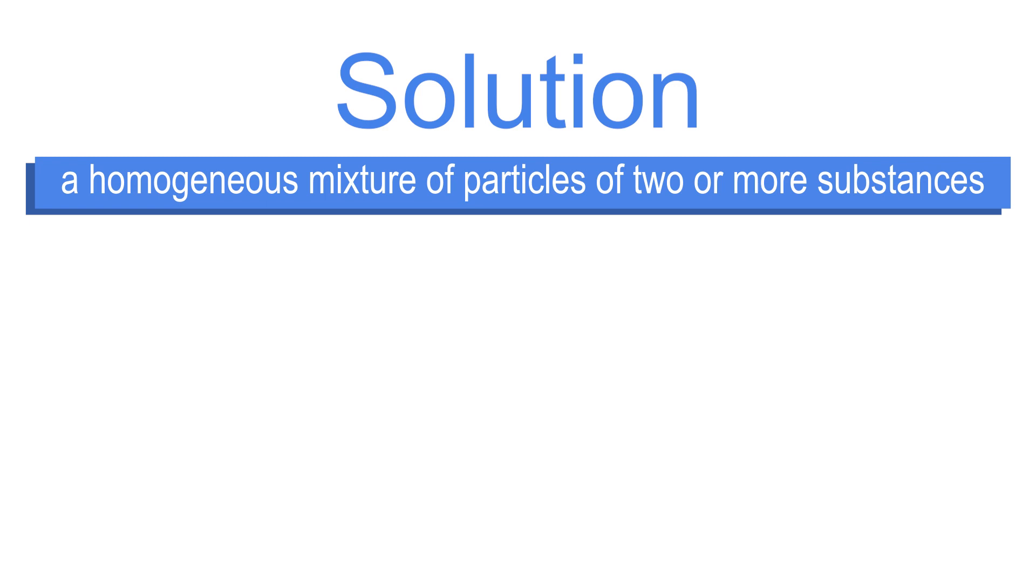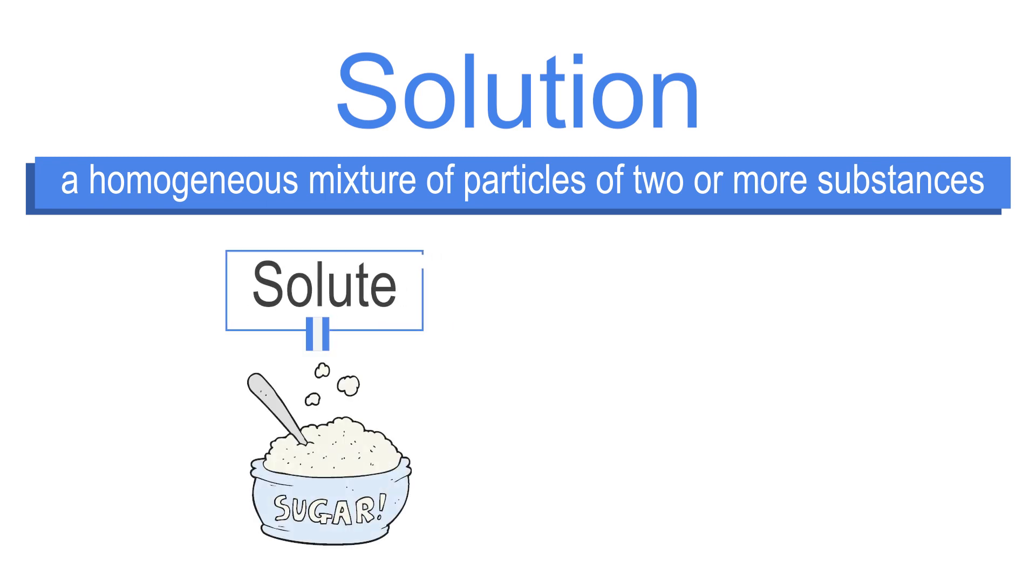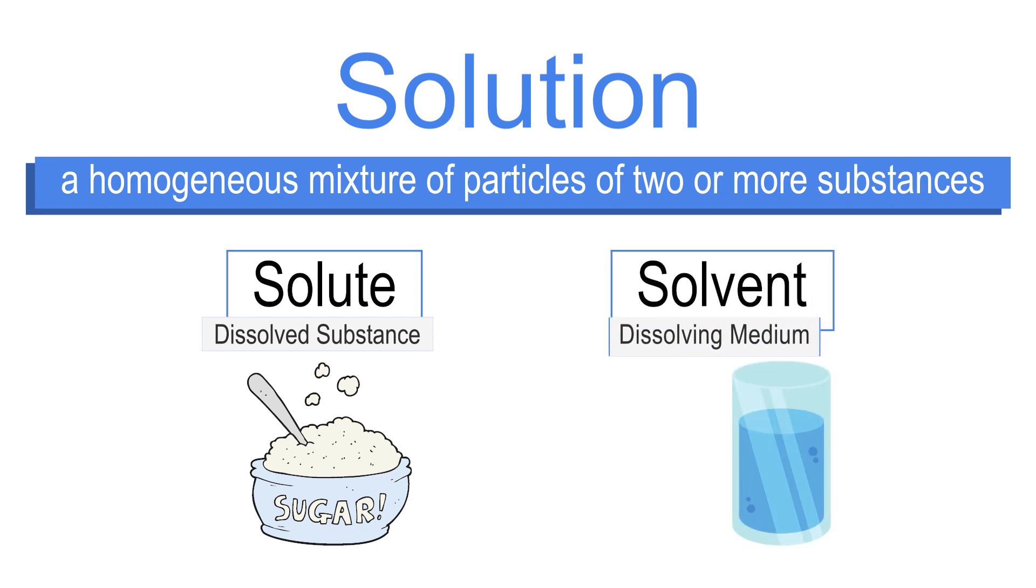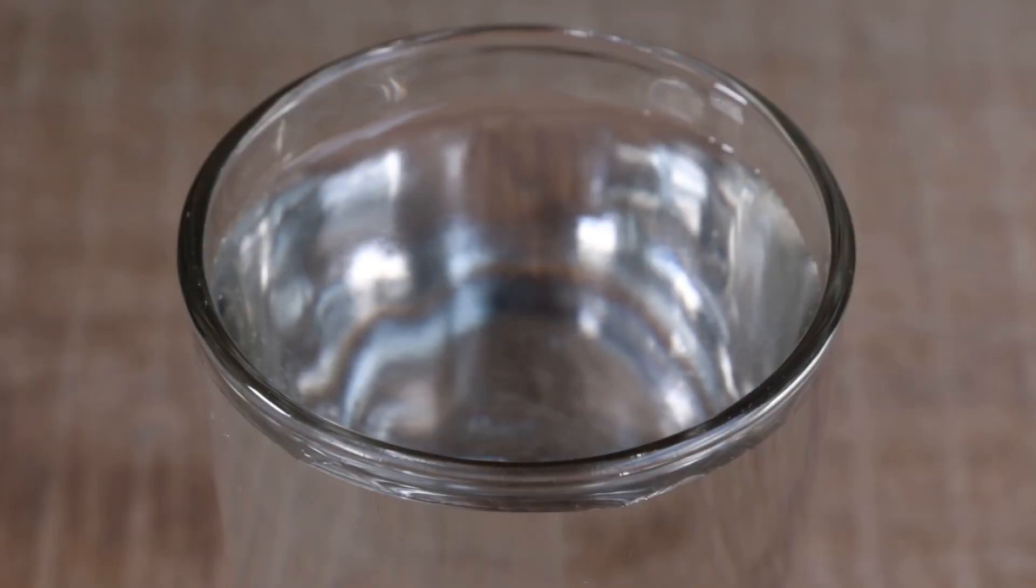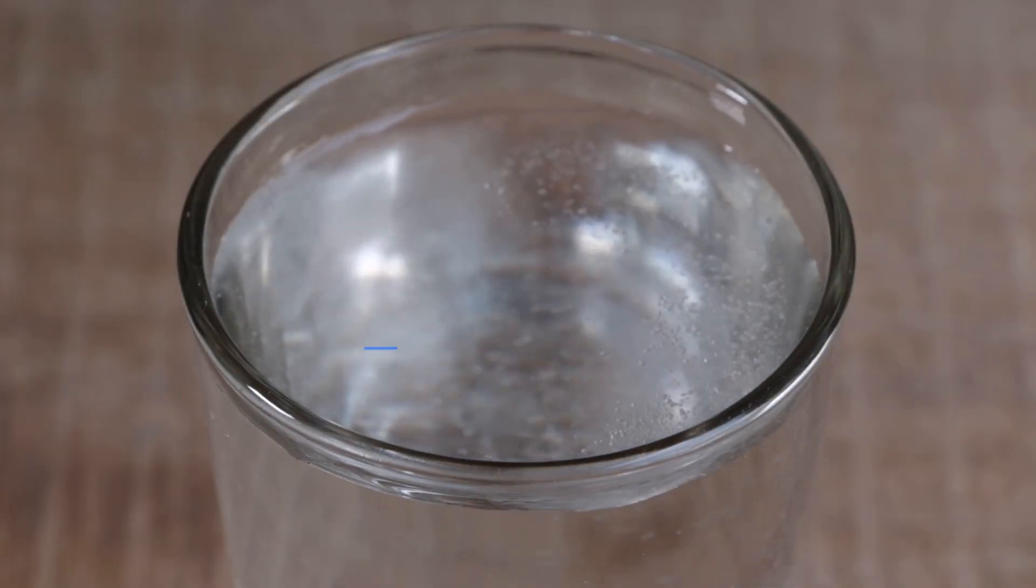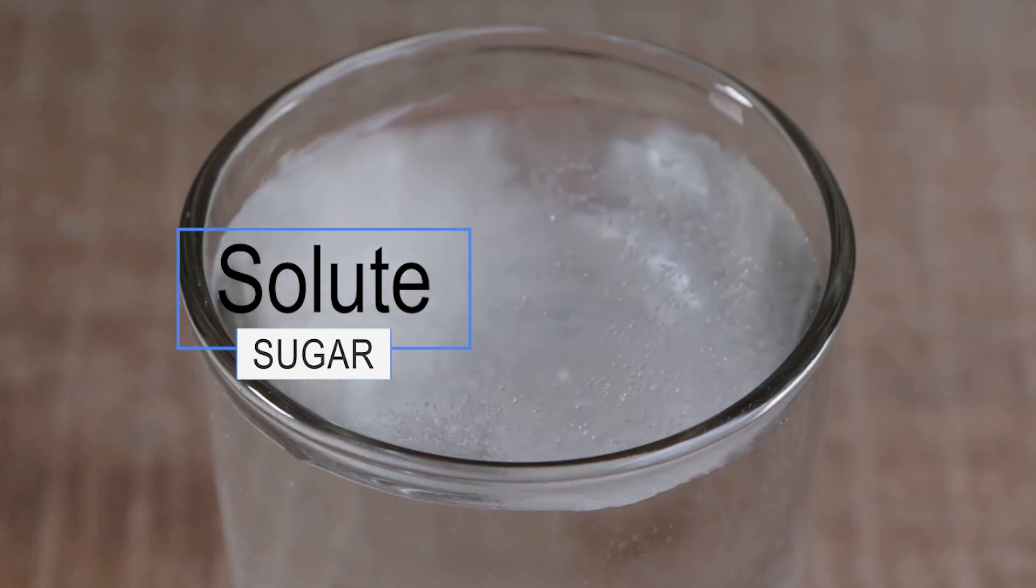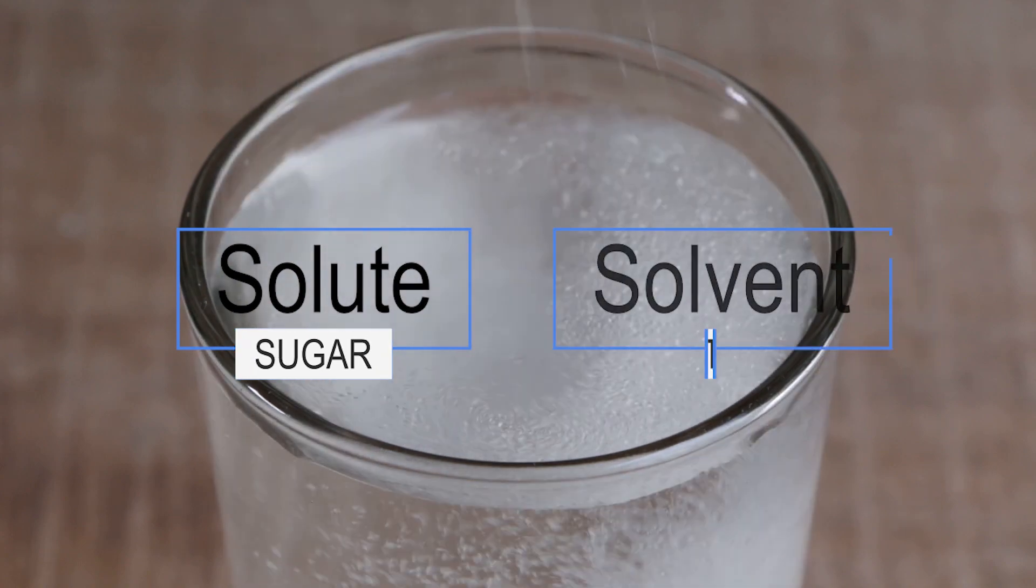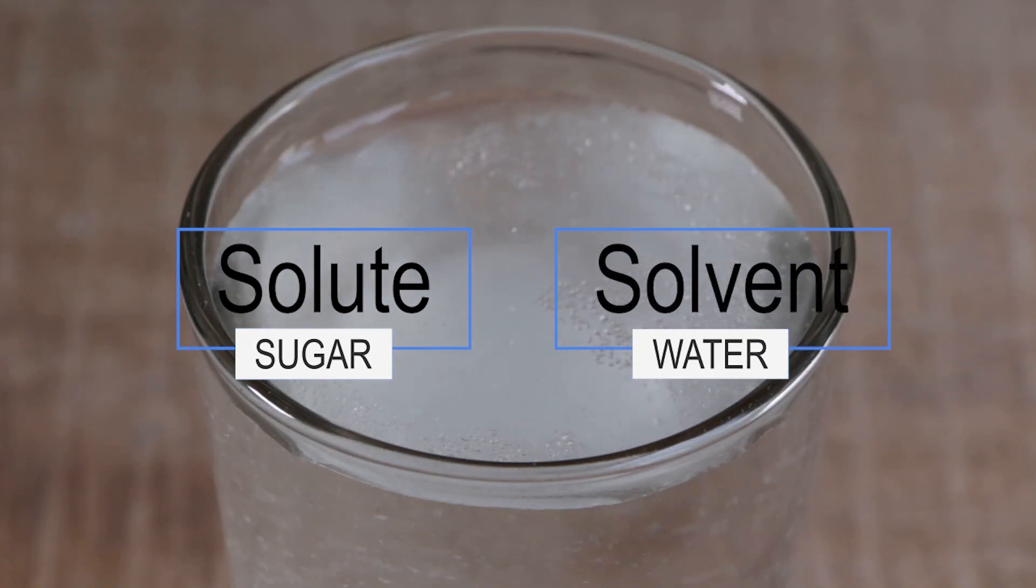A solution consists of two components: solute, which is the dissolved substance, and solvent, the dissolving medium. For example, sugar solution consists of sugar as the solute and water as the solvent.